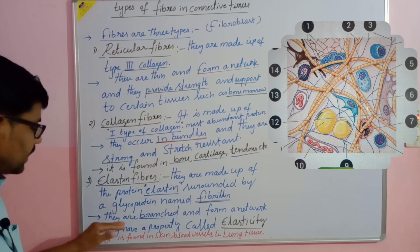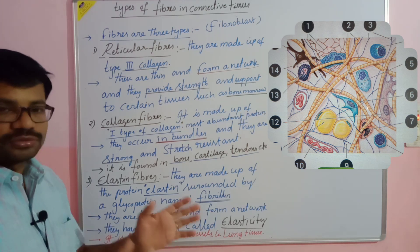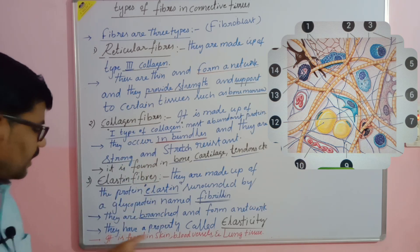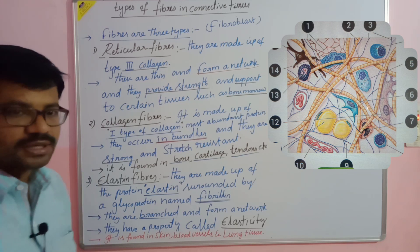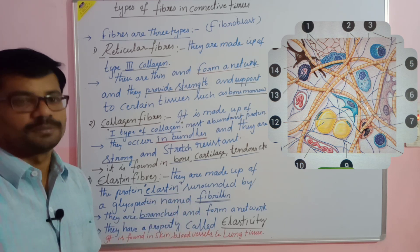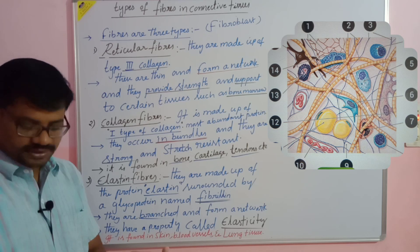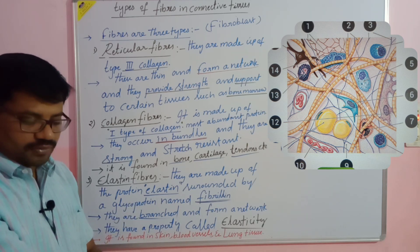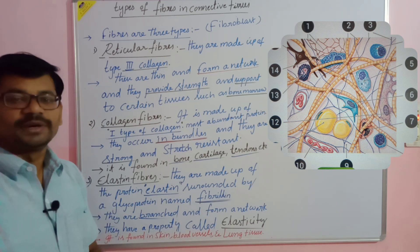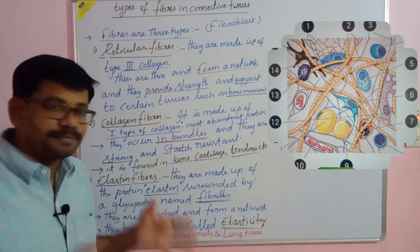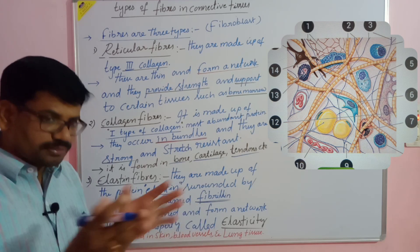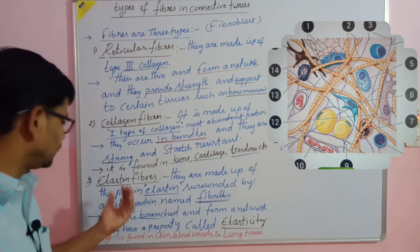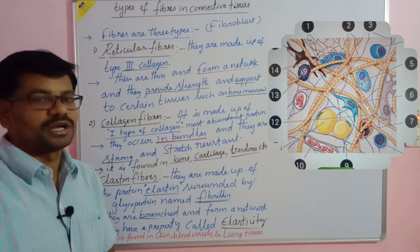Elastic fibers are branched and form a network. Compared to collagen fibers, which are unbranched, elastic fibers are branched and have the property of elasticity — meaning they can expand and recoil back to their normal position. They are mostly found in the dermis of the skin, where they can expand and recoil. They are also found in the walls of blood vessels, which resist high blood pressure by expanding and returning to normal, and in lung tissues, which are spongy and can expand and return to normal.